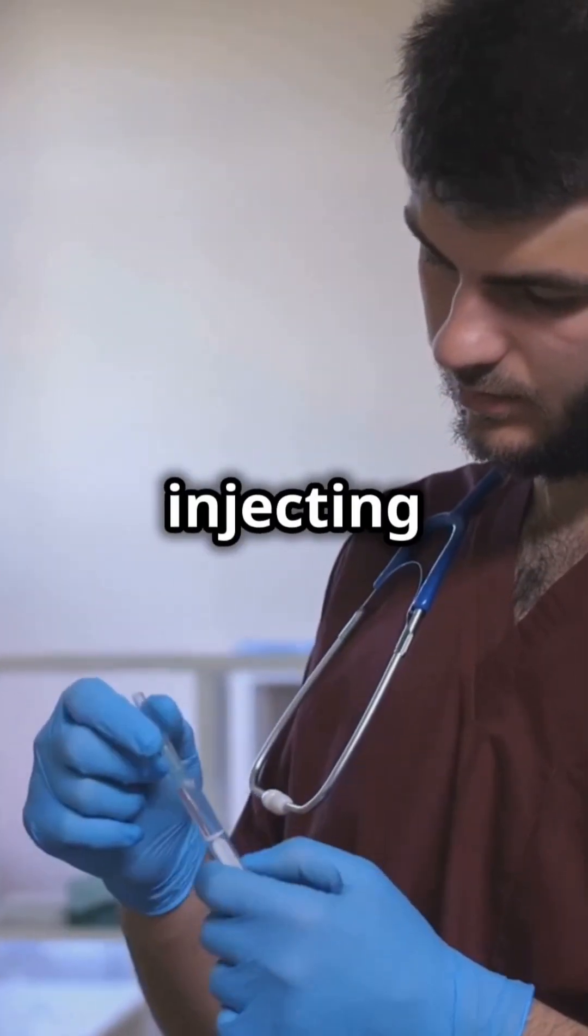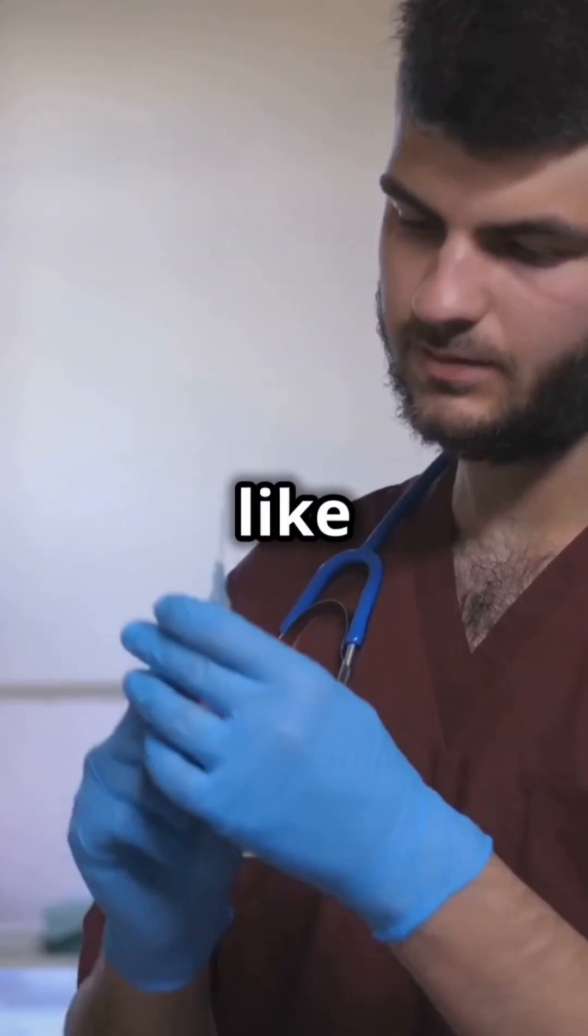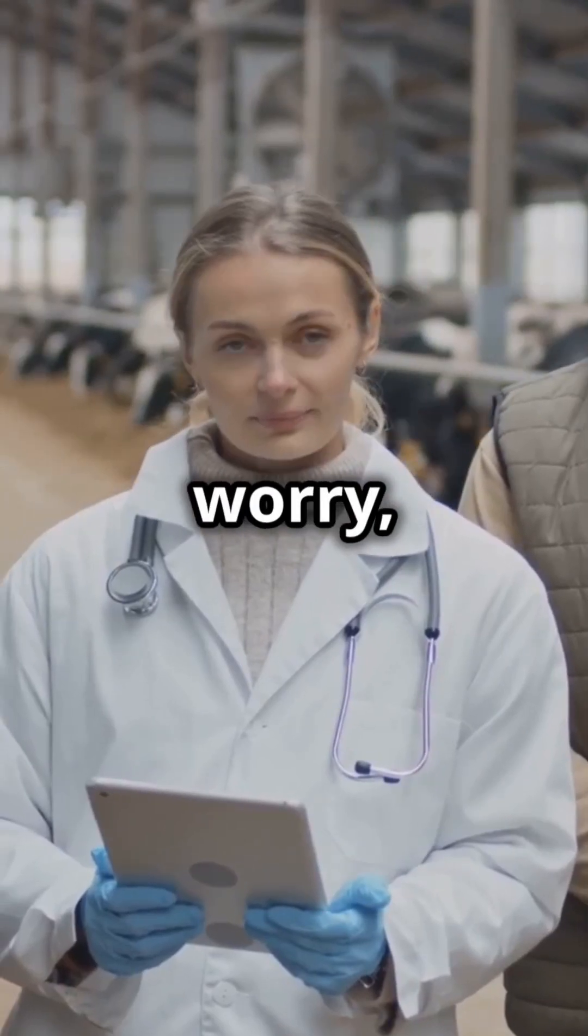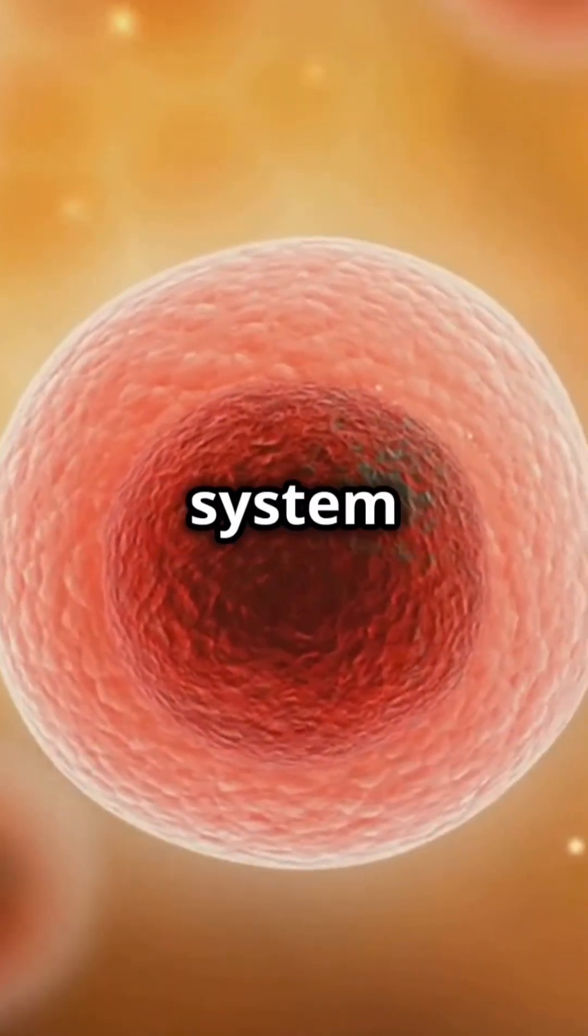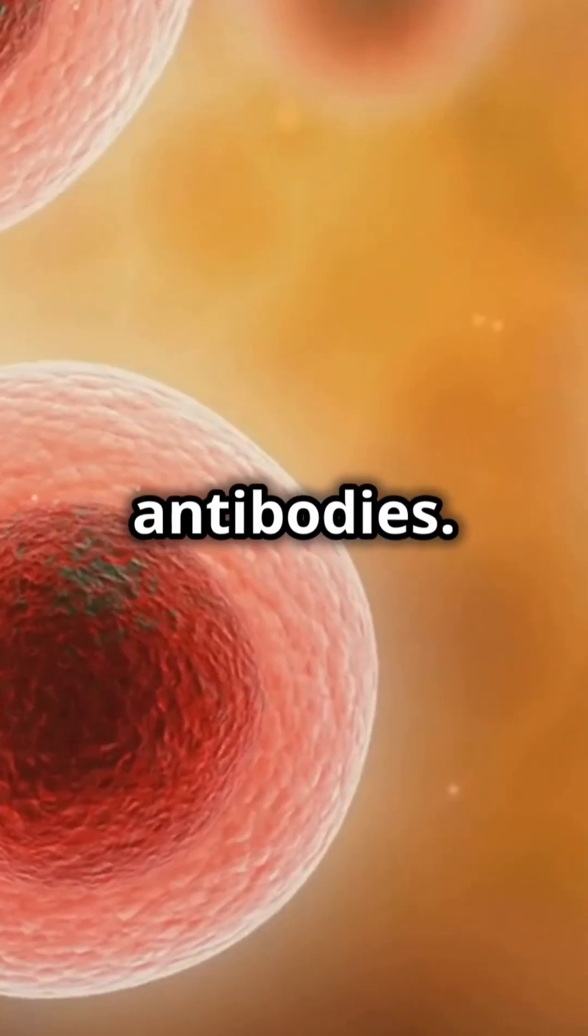First up, creating antibodies. Antivenom starts with injecting a small dose of venom into animals like horses or sheep. Don't worry, it's safe. Their immune system kicks in, creating special proteins called antibodies.